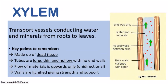So let's begin with the xylem. The xylem consists of the transport vessels conducting water and minerals from the roots to the leaves. These water and minerals are going to be coming from the soil, so they need to get into the roots and be transported upwards to the leaves where photosynthesis can take place. Just recall that photosynthesis requires water as a raw material, so that is how the water gets into the plant.